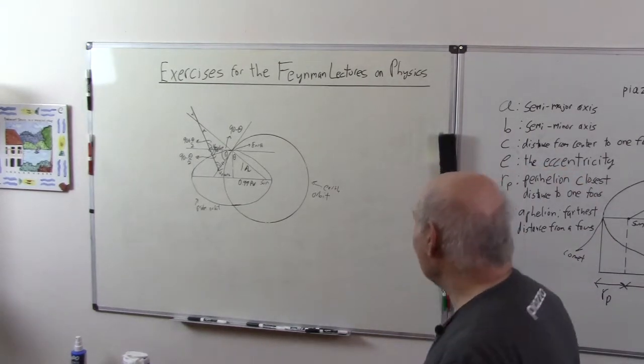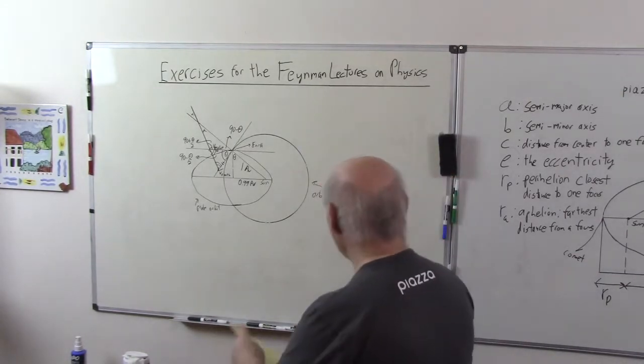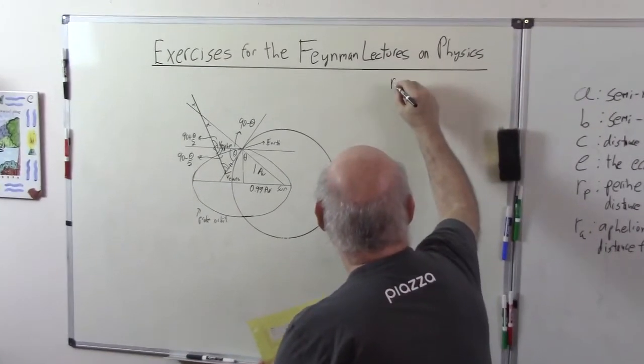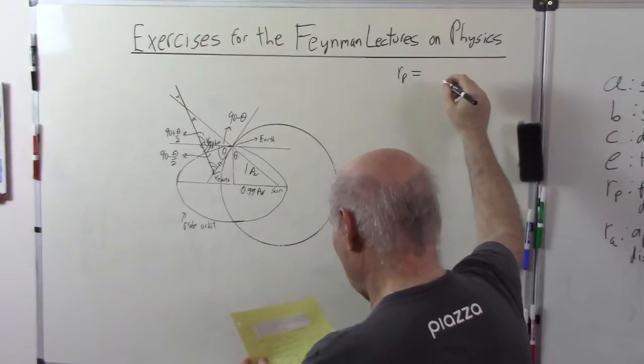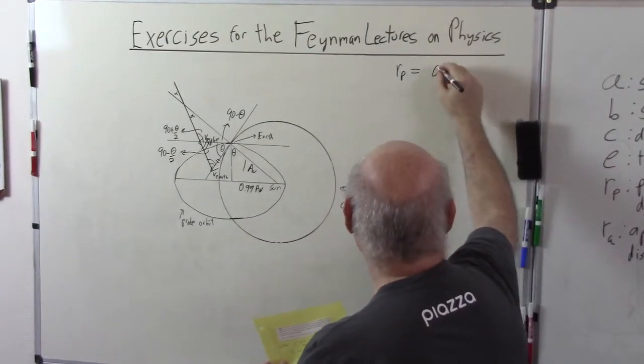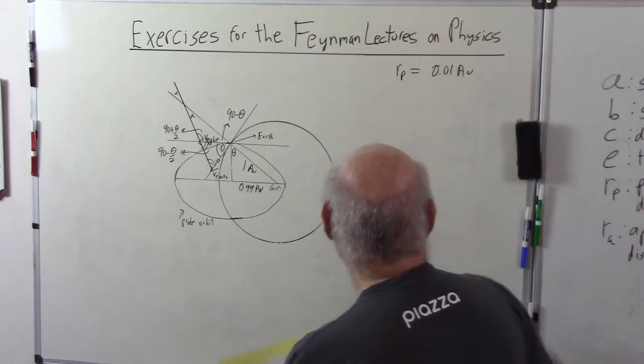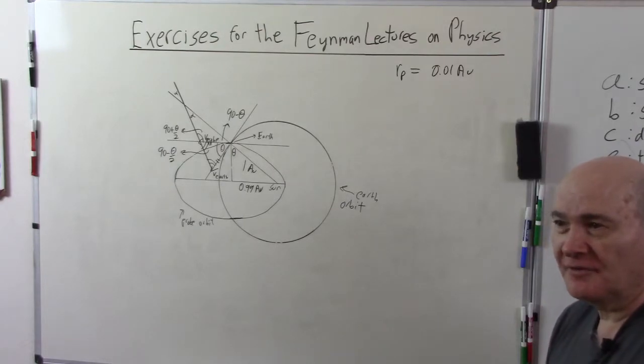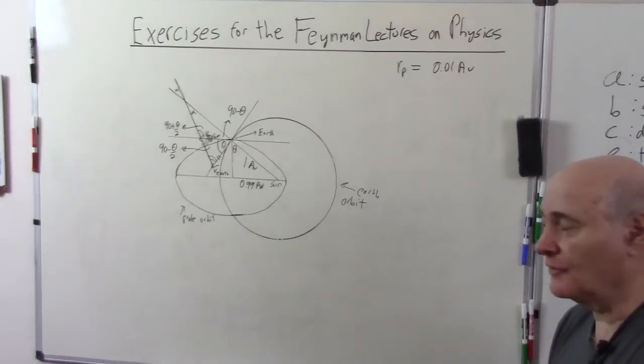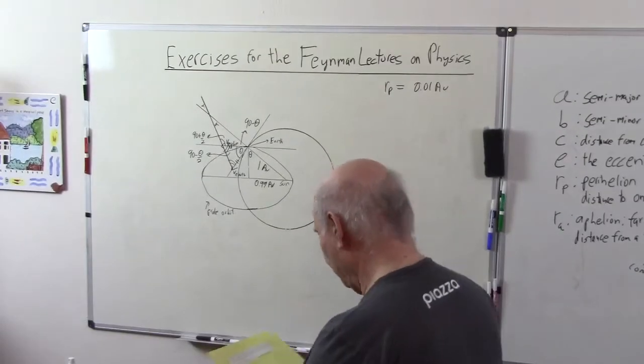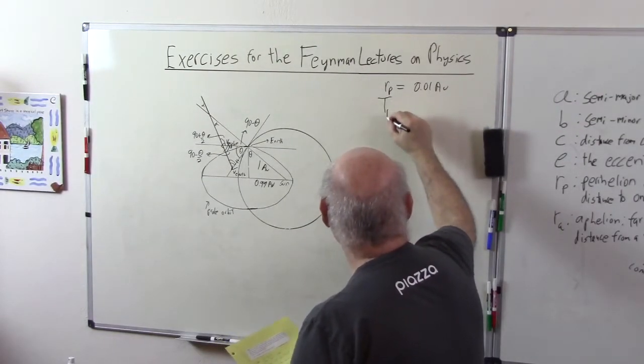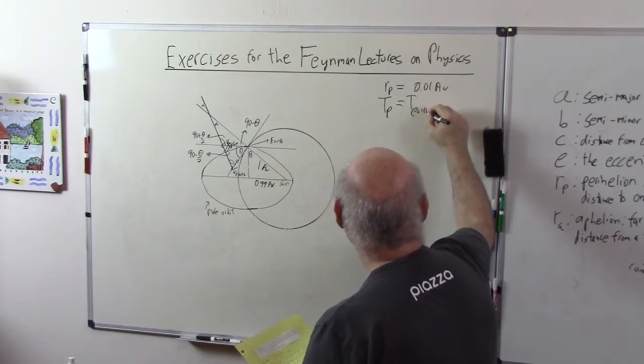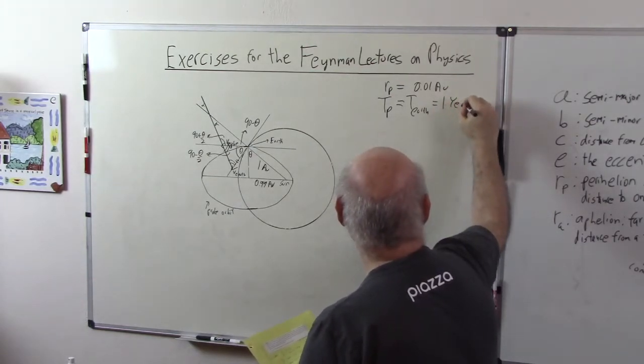So there's a lot to digest in this problem and let me write down some of the information that we had. For the probe the perihelion distance is 0.01 AU. AU stands for astronomical unit and it's the same as the mean distance of the Earth from the sun. That's also 1 AU. Now the period of the probe is equal to the same as the period of the Earth which is equal to one year. This is the key to the problem.